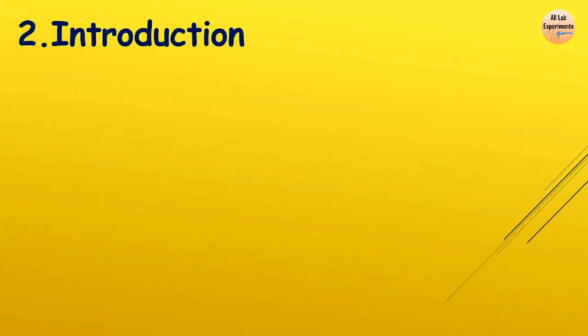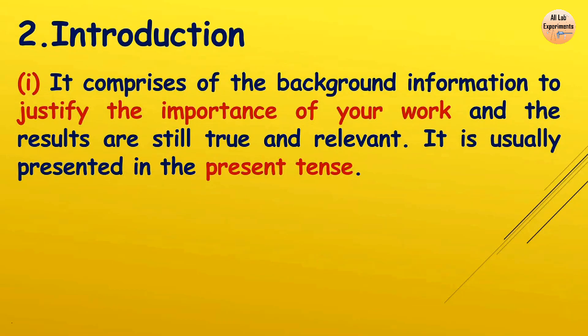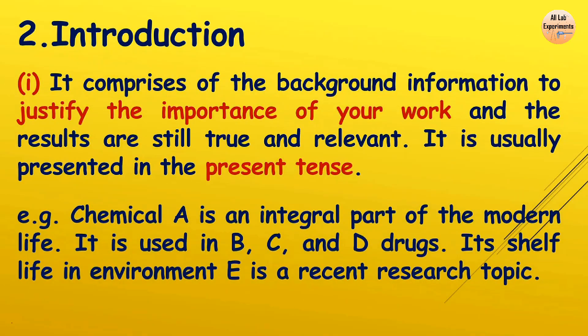After that we come to the introduction, which is the first tricky part of your paper to write. When you start writing an introduction, it comprises background information to justify the importance of your work, and the results obtained by you are still true and relevant — so we use present tense. For example: 'Chemical A is an integral part of modern life. It is used in B, C, and D drugs. Its shelf life in environment E is a recent research topic.' In this way, I am putting the relevance of the work and giving background information.